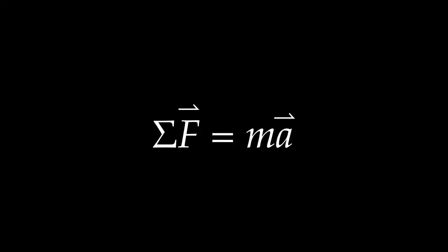Newton's second law gives us the prescription for solving all the problems of classical mechanics. The net force — the vector sum of all influences and constraints that could possibly affect the motion of a system — is equal to the total mass of the system times the acceleration. The challenge is to look at any system carefully and reason out what these influences are.